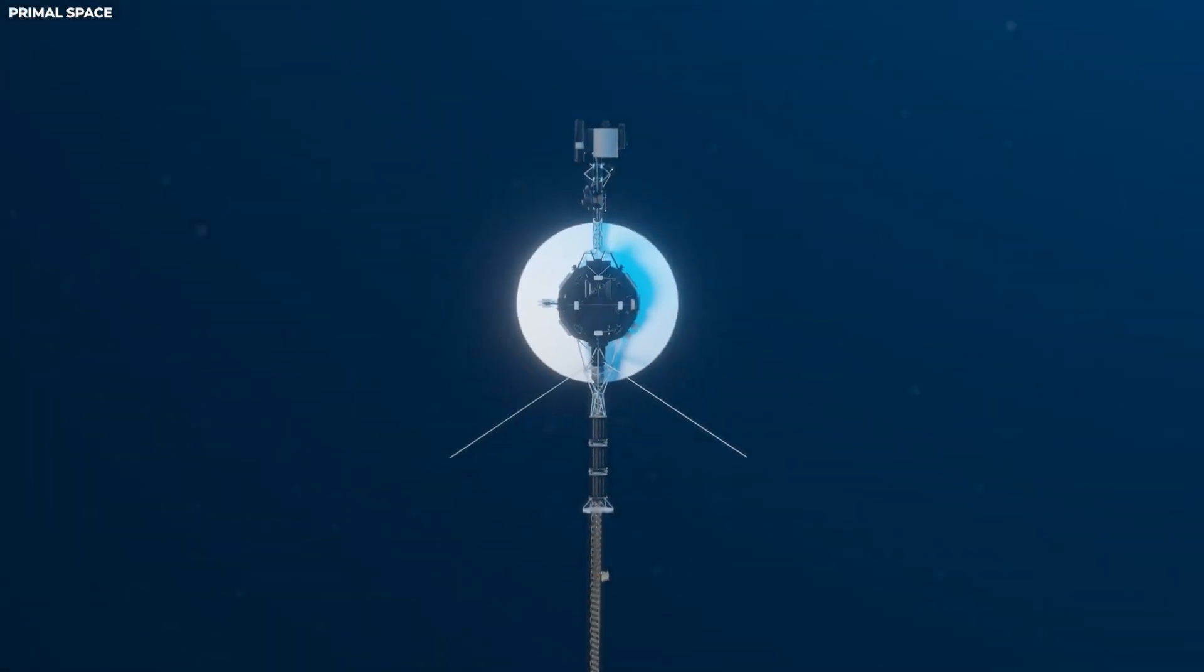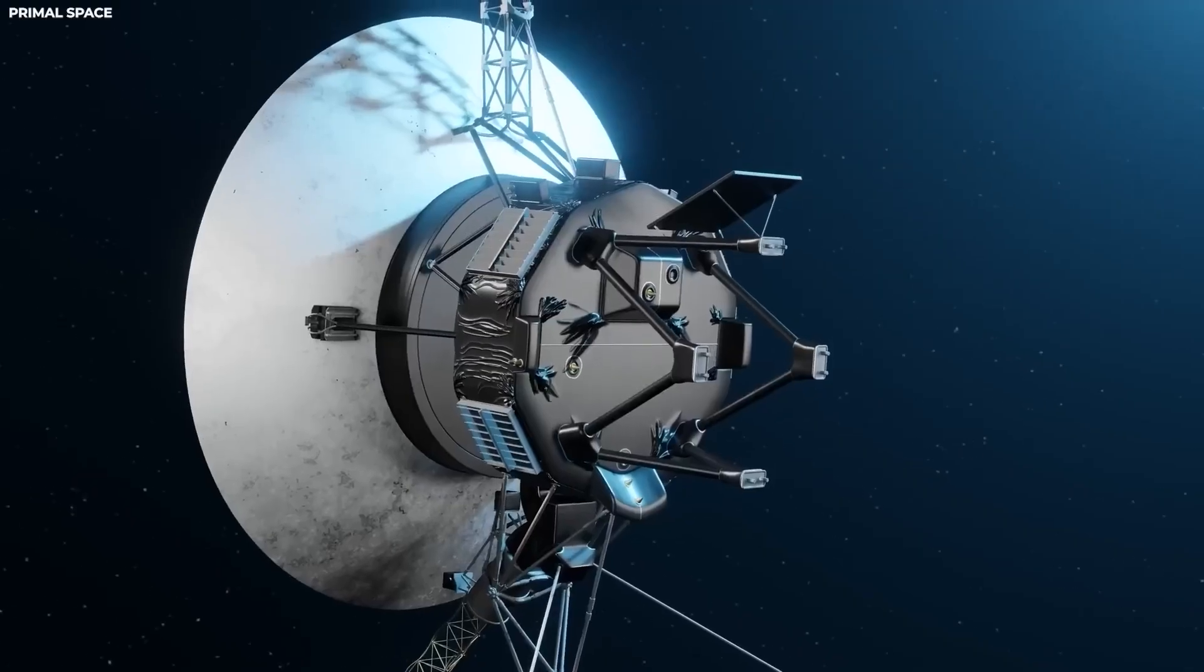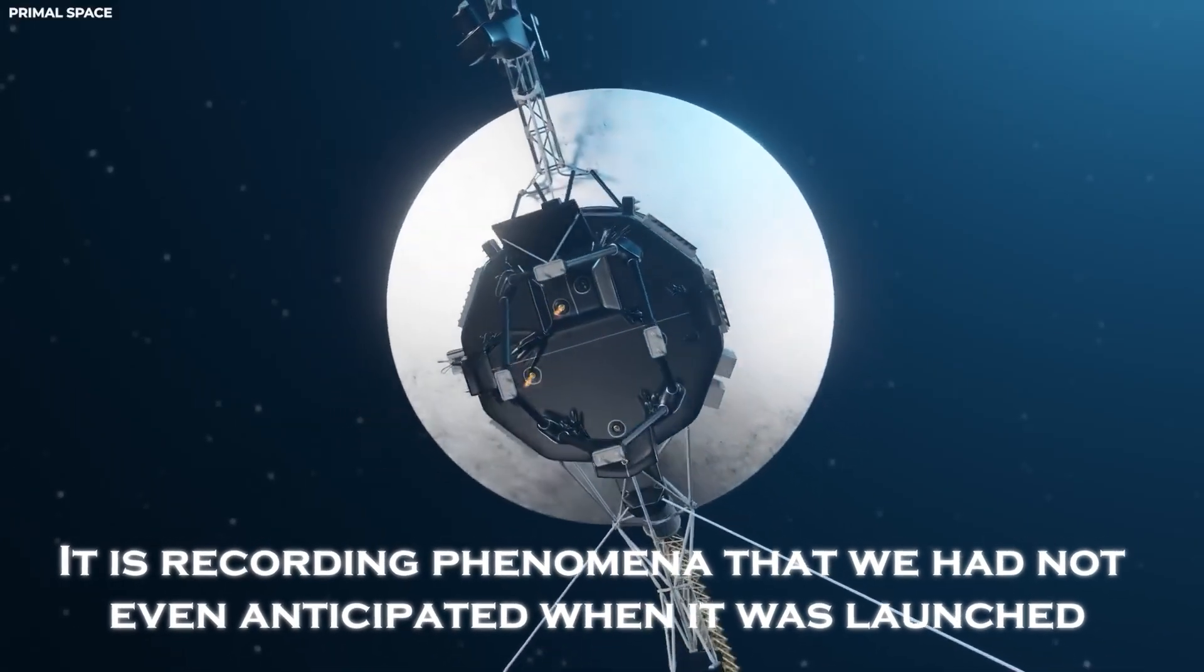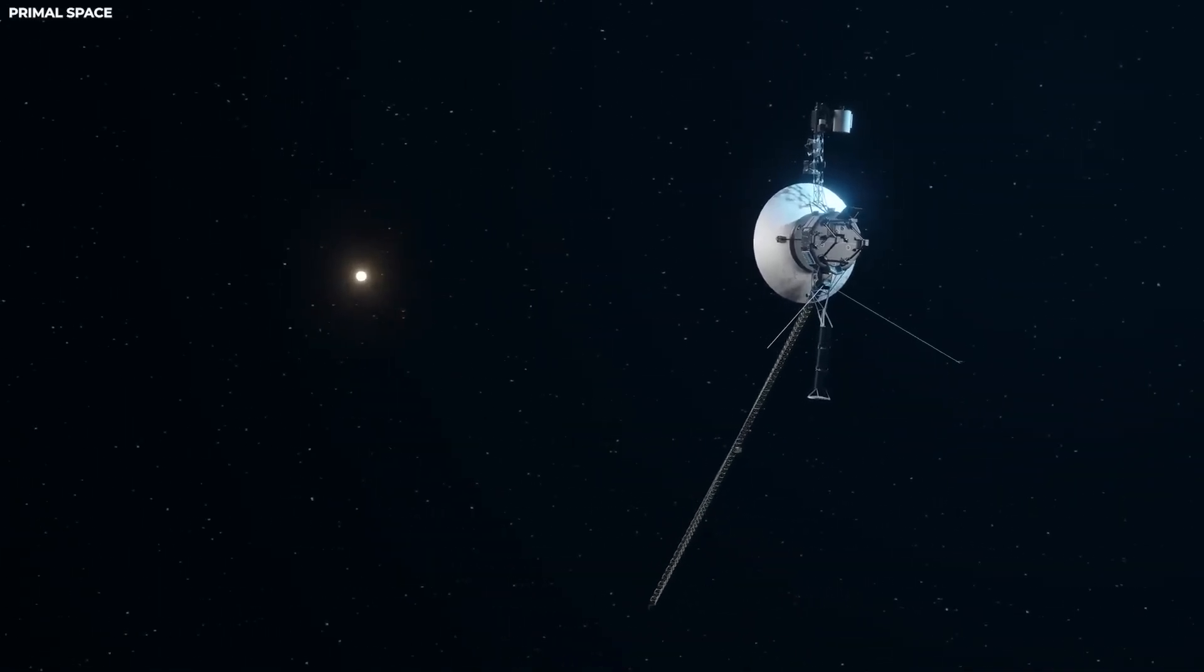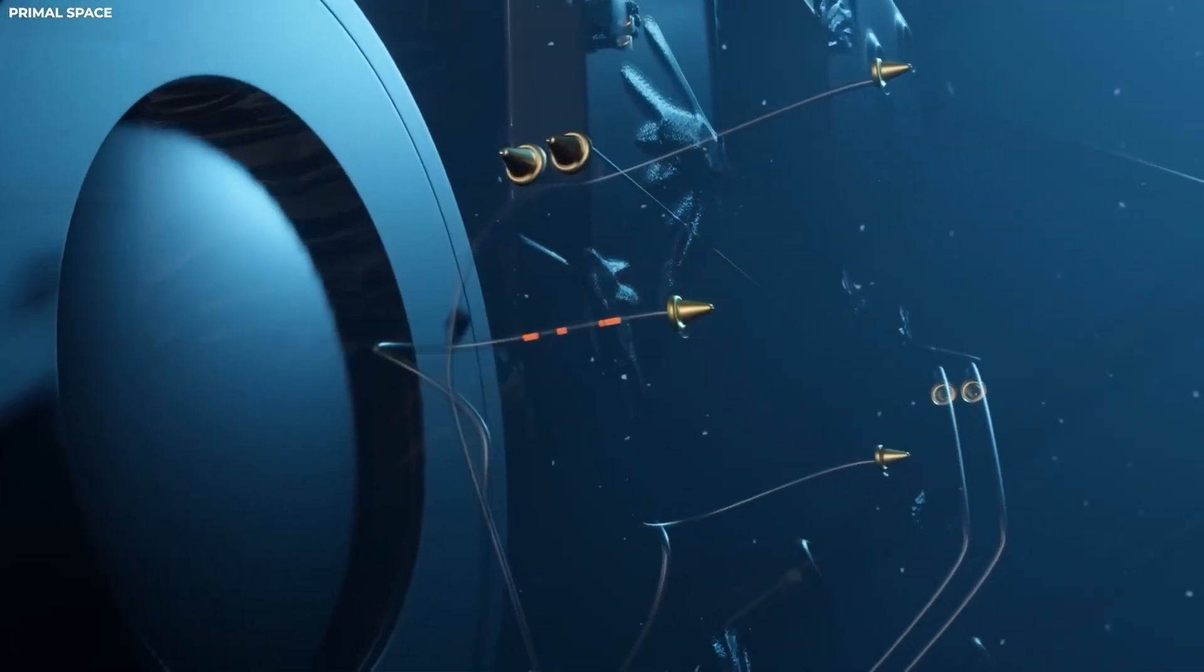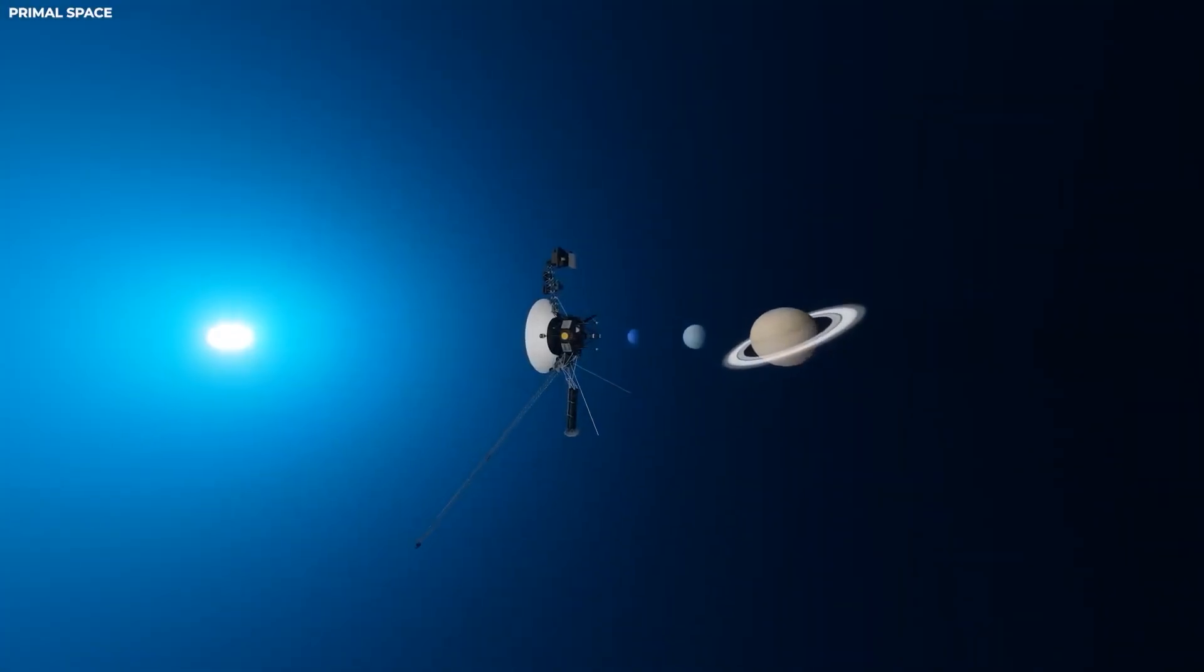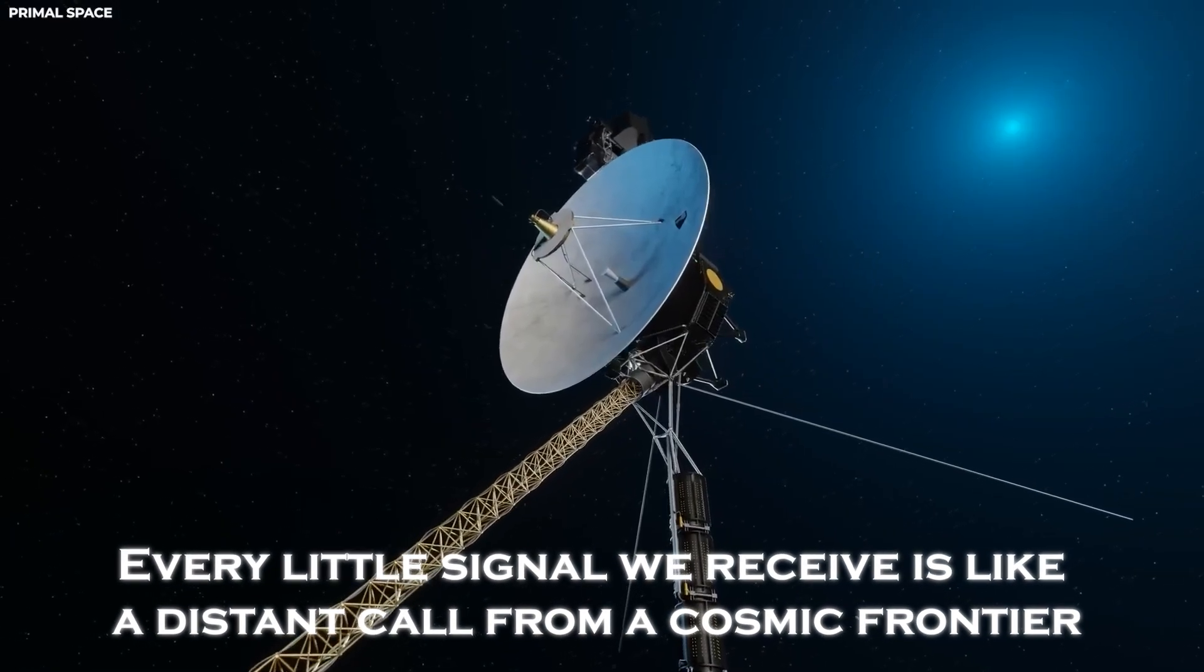Voyager 1's technology is antiquated compared to what we have today, but it remains our best tool at the frontier of the solar system. It is recording phenomena that we had not even anticipated when it first launched, and it remains our only witness in that remote region. Despite being more than 23 billion kilometers away from us, Voyager 1 continues to send back priceless data. Every little signal we receive is like a distant call from a cosmic frontier.